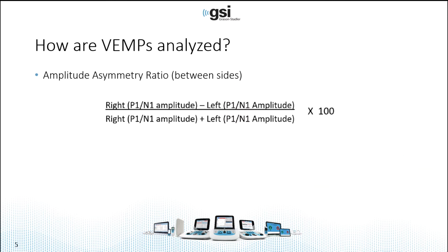While the VEMPs are collected differently, they're analyzed similarly, in that an amplitude asymmetry ratio is calculated — which is the difference in amplitude between the right and the left side. You can also obtain an OVEMP threshold, and there are other ways to analyze, but the asymmetry ratio is the primary measure.